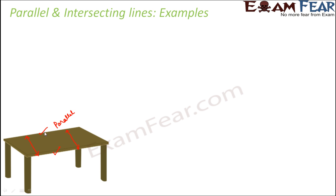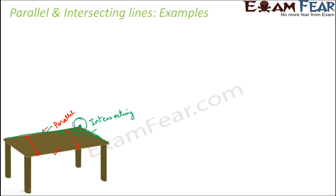Now when you look at the adjacent sides of the table — this side and this side — the distance between them is gradually increasing. So they are definitely not parallel lines; they are intersecting lines. Do they have a common point? Yes, of course, because these two lines meet at this corner point. So the table is one example of an object where we see both parallel lines and intersecting lines.